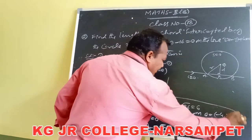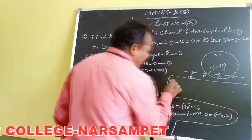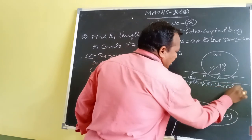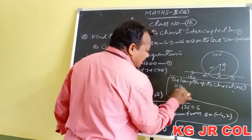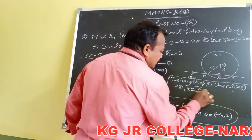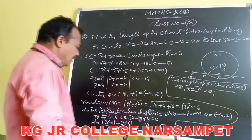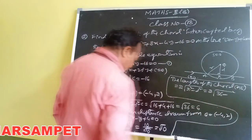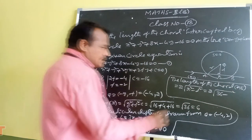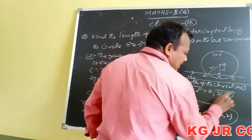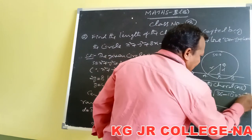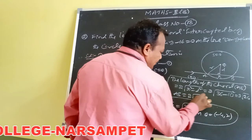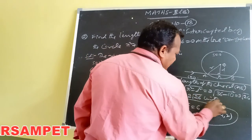Now we find the length of the chord AB using the formula 2√(r² - d²). Here r = 6, so r² = 36; and d = √10, so d² = 10. Therefore, length = 2√(36 - 10) = 2√26 units. The length of the chord is 2√26 units.